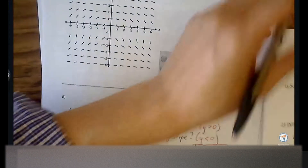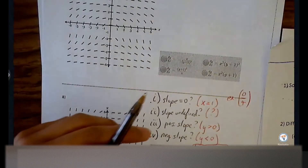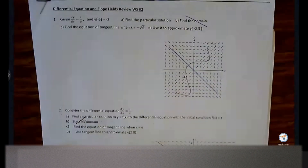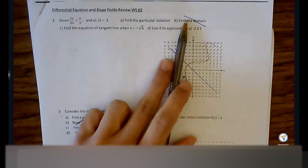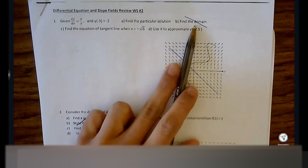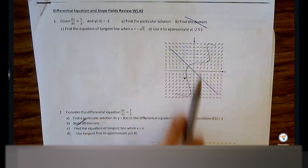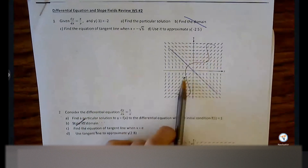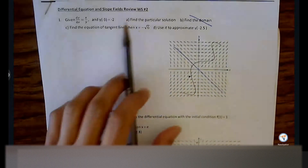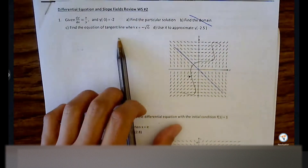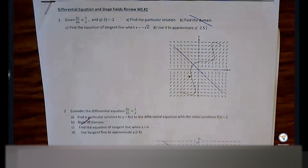Here's Worksheet 2. Worksheet 2 has domain on it, but we're not going to do domain — at least not for the test. Maybe I'll come back to it when we do exam review. So that means we don't need the slope field — the slope field is to help with the domain — but we'll just do particular solution, tangent line, and linear approximation.